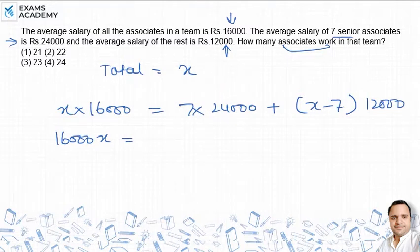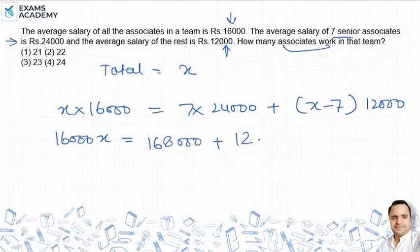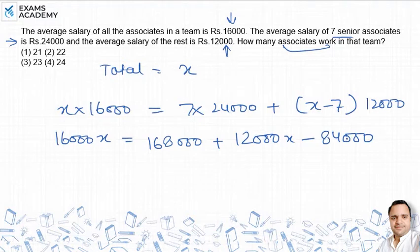Expanding: 7 × 24 gives 168 (thousand), and 12 × 7 gives 84. So we have 168,000 plus 12,000x minus 84,000. Cancelling and simplifying terms on both sides of the equation.